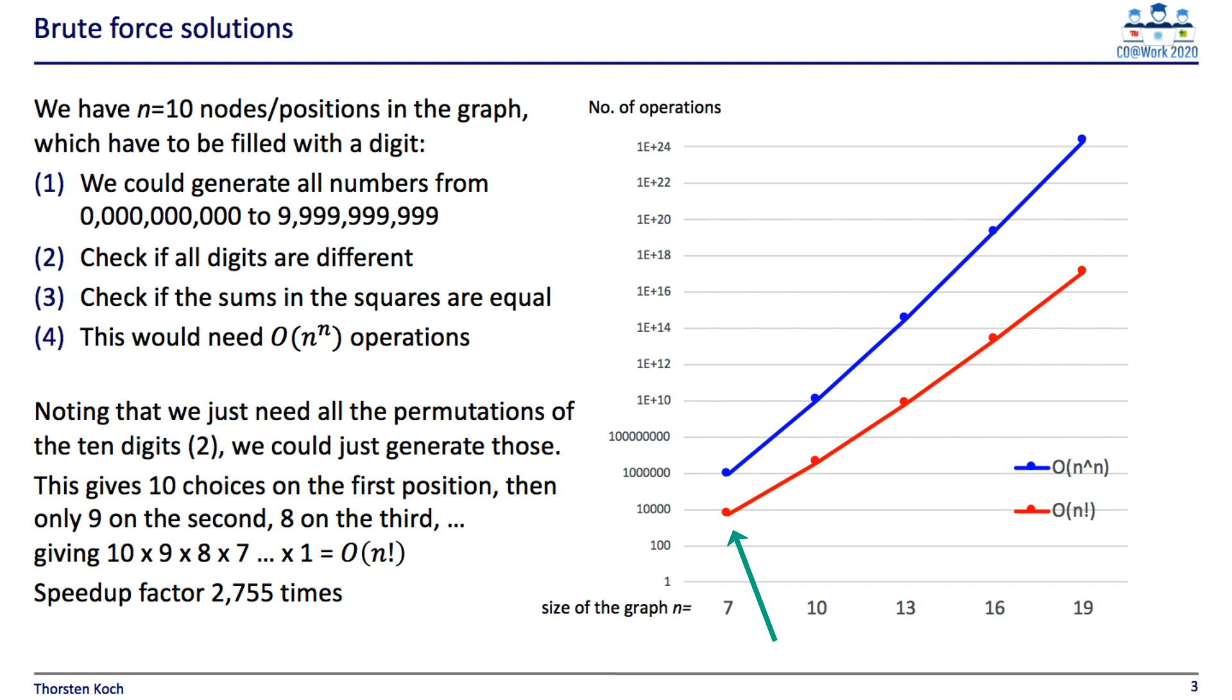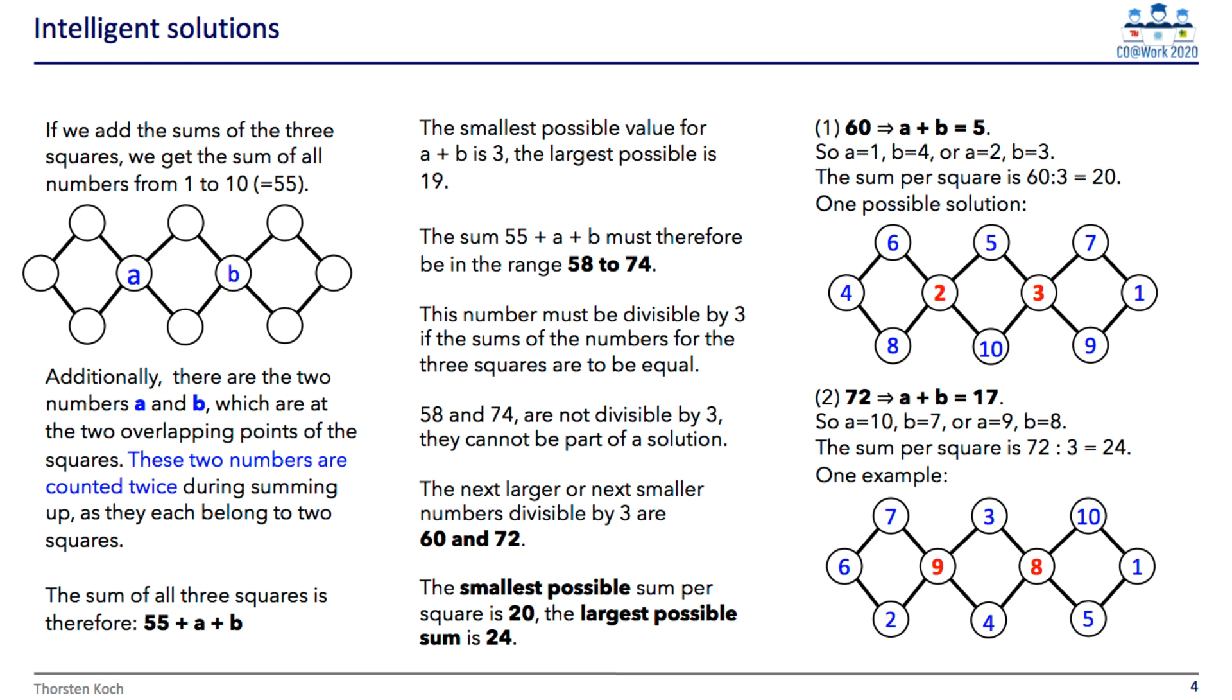With just 2 squares, we would only have 5,040 possibilities, but with 4 squares we already reach more than 6 billion. Anyway this is already a nice speed up compared to being completely stupid. How would we solve this?